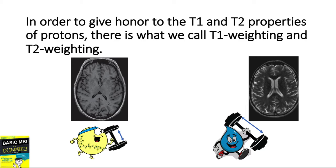In order to give honor to the T1 and T2 properties of protons, there's what we call T1 weighting and T2 weighting. When we say weighting, it just means you give more weight to the importance of that property. So meaning for T1 weighted images, it is more important that I highlight the T1 property of fat. That's why in T1, fat is bright, because we want to highlight the T1 property of fat. And for T2 weighted images, what is important is to highlight the T2 property of water, which is long TE. And that's why water will be bright on T2.